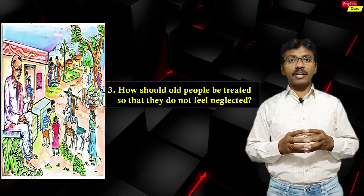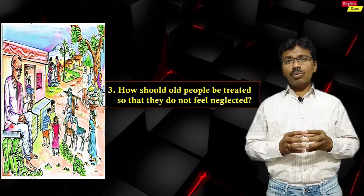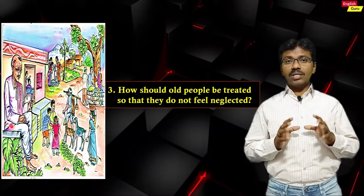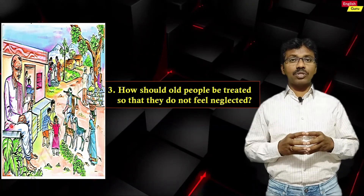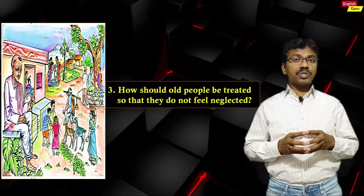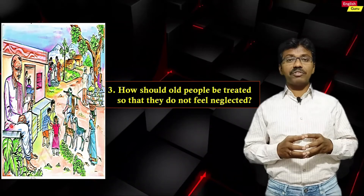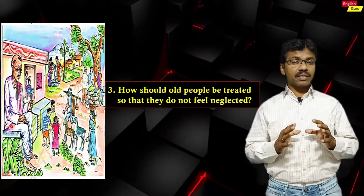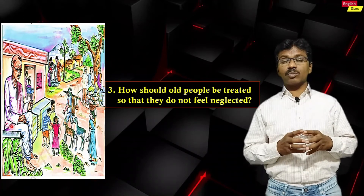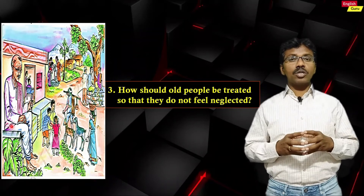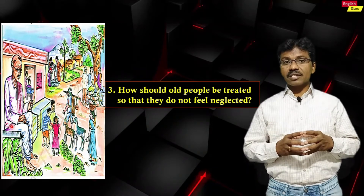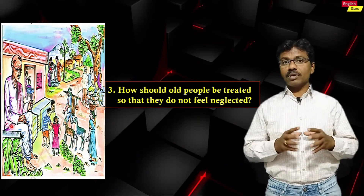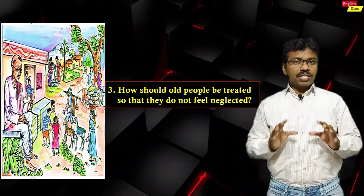The third question: How should old people be treated so that they do not feel neglected? We should all learn to respect old people and take their advice as guidance. We should address their needs, give them whatever they want, and give them time — sit near them and talk to them. We should give them equal importance as family members. If they feel neglected, they will never come forward to share their experience, which is not good for younger generations. We must learn how to respect the needs of old people in our village or family.